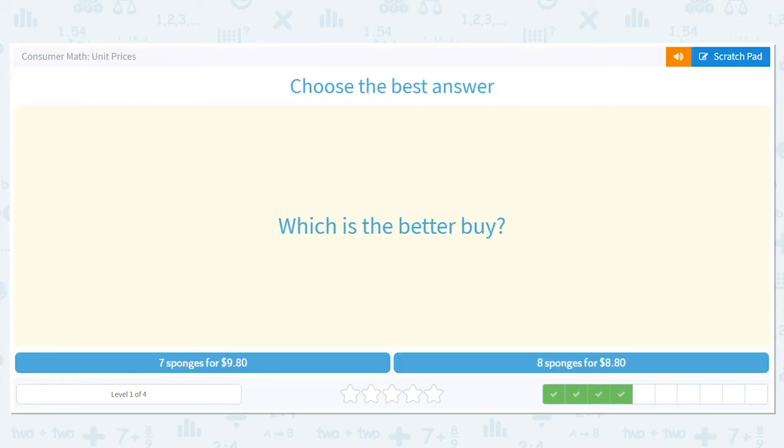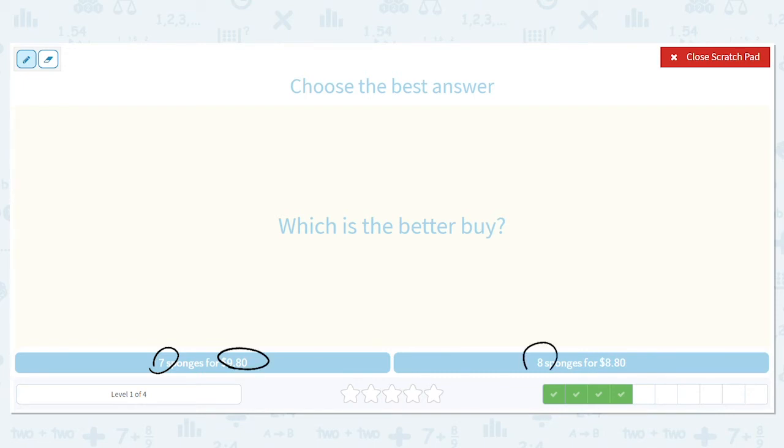What's the better buy? 7 sponges for $9.80 or 8 sponges for $8.80? Let's use some logic here. You can buy fewer and pay more, or you can buy more and pay less. There's an obvious answer. You don't have to do math to know which one of these is better. You're getting more sponges and you're paying less. That sounds like a, I sound like a salesman for these sponges. But you are, you're getting more sponge for less money, so it's got to be this.